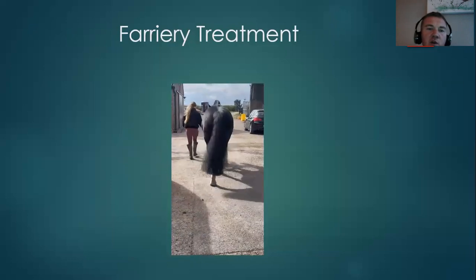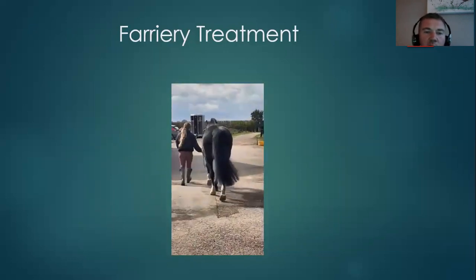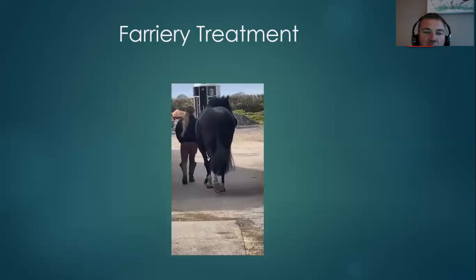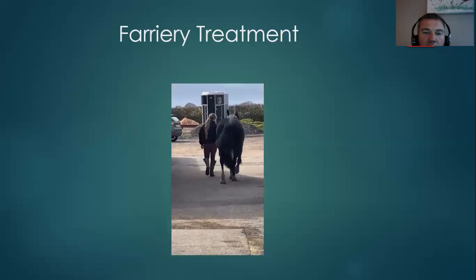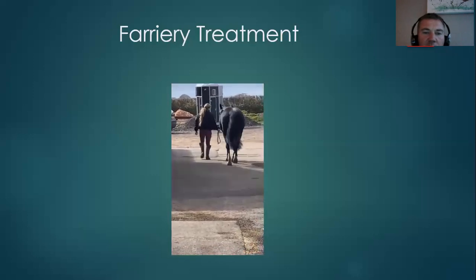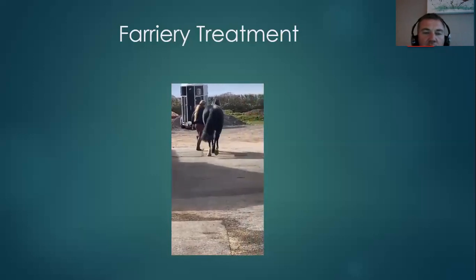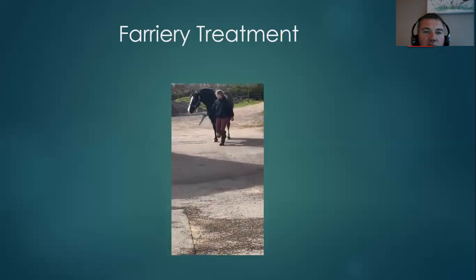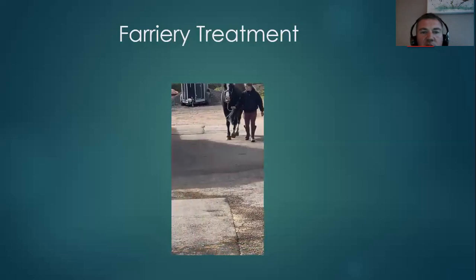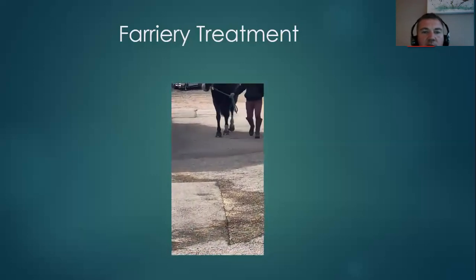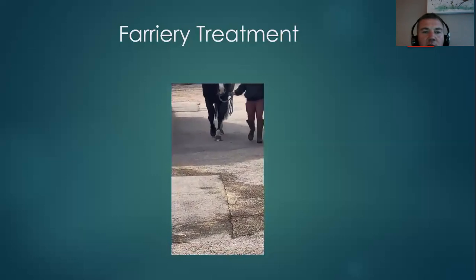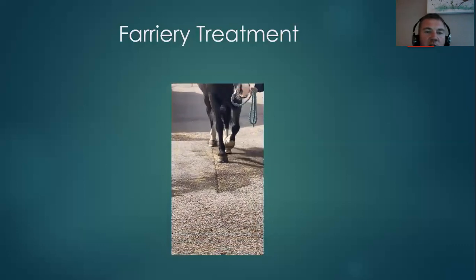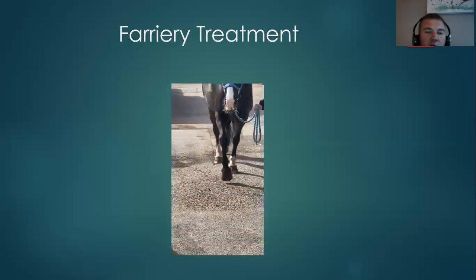When it comes to farrier treatment, like we do for all horses, we watch them walk away — we look for any lameness, any abnormalities of gait, any sideways movements of the limb as it passes forward. We're seeing how comfortable the horse is to turn, and seeing how the toe is landing. This also helps to formulate our shoeing plan going forwards.